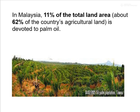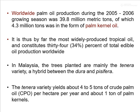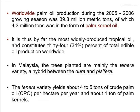In Malaysia, 11% of total land area — about 62% of the country's agricultural land — is devoted to palm oil. Worldwide palm oil production during the 2005–2006 growing season was 39.8 million metric tons, of which 4.3 million tons was palm kernel oil, constituting 34% of total edible oil production worldwide. In Malaysia, the trees planted are mainly the Tenera variety, a hybrid between Dura and Pisifera. The Tenera variety yields about 4 to 5 tons of crude palm oil per hectare per year and about 1 ton of palm kernel.